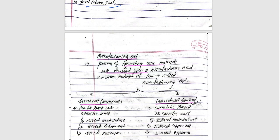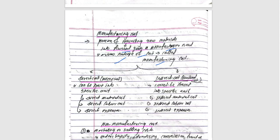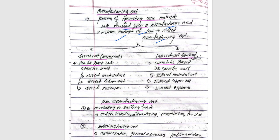Manufacturing cost is the cost involved in the process of converting raw materials into finished goods. Manufacturing costs can be of a different nature: direct cost or indirect cost, prime cost and overhead cost.